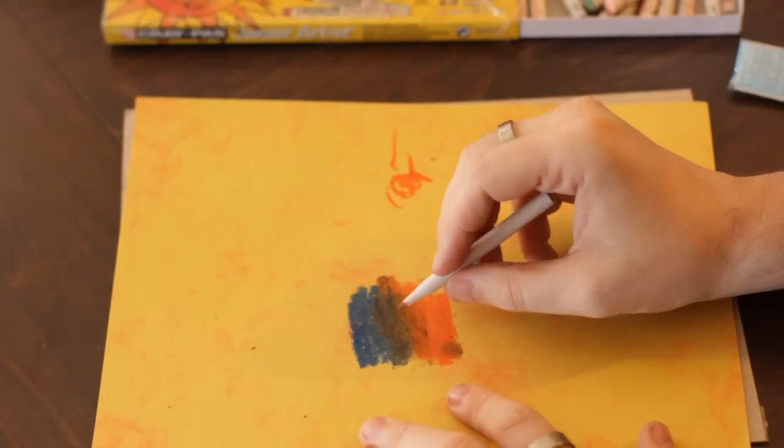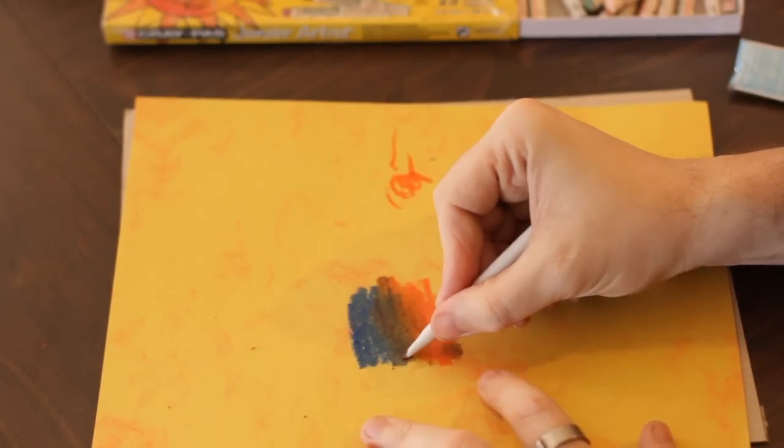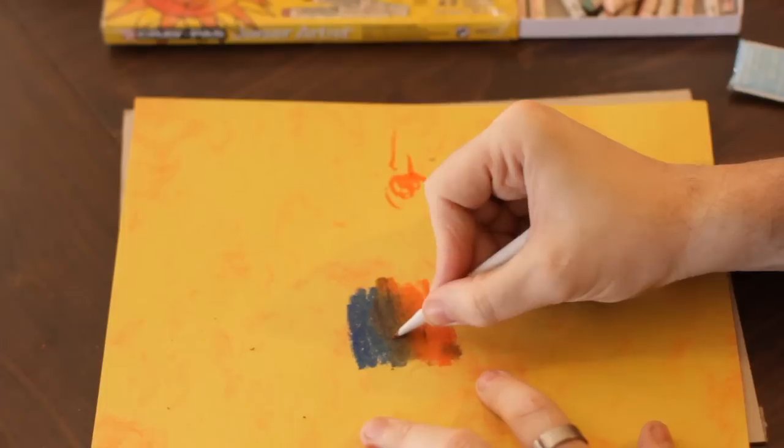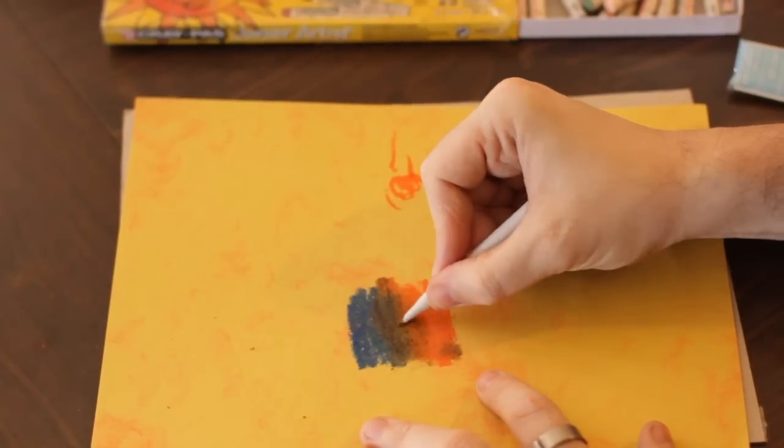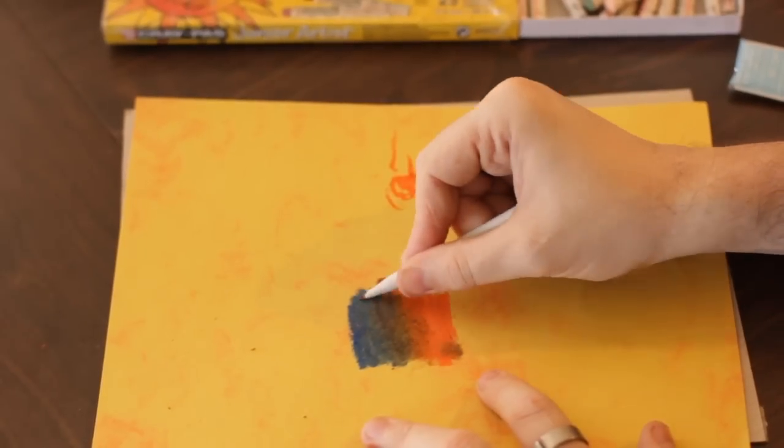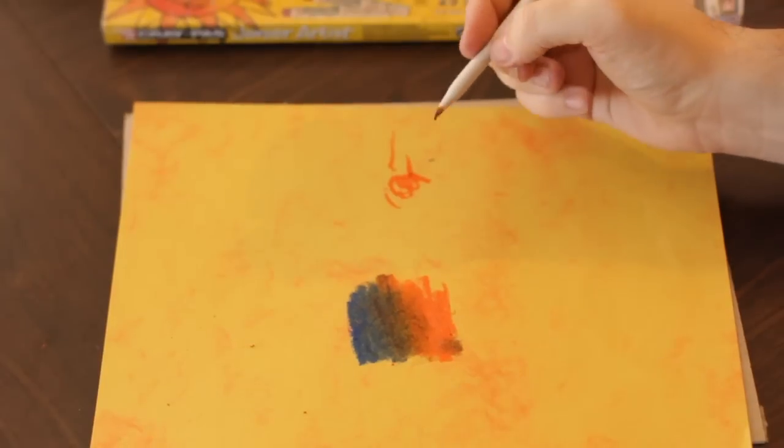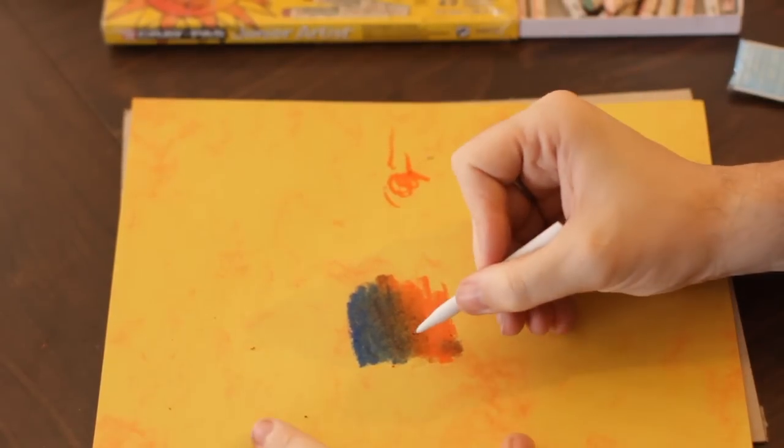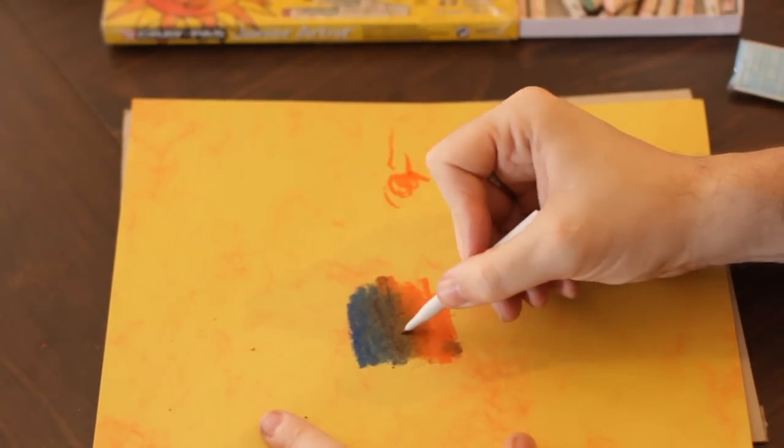Alternately, you can go in tiny little circles from one color to the next. As you can see, we're not getting a perfect little wash here, but that's because I purposely decided to use two colors that are opposites.